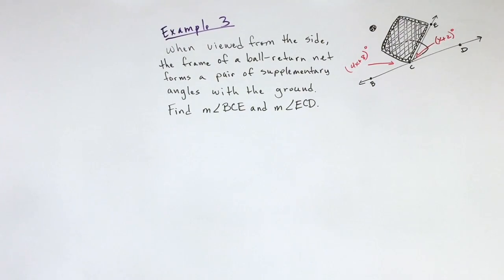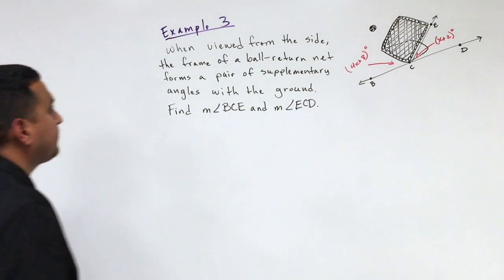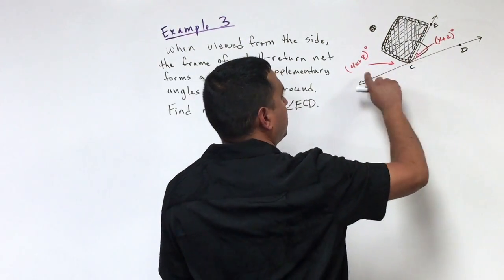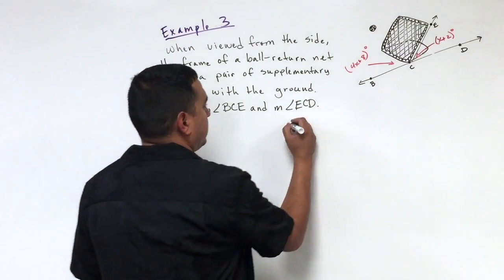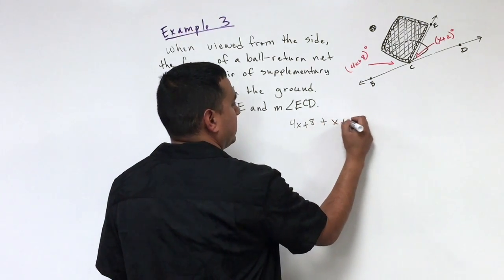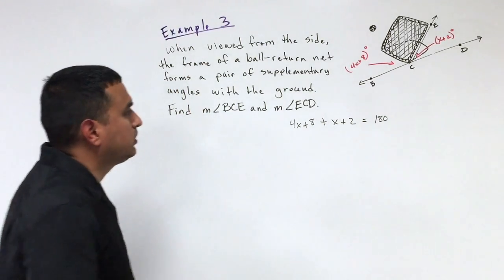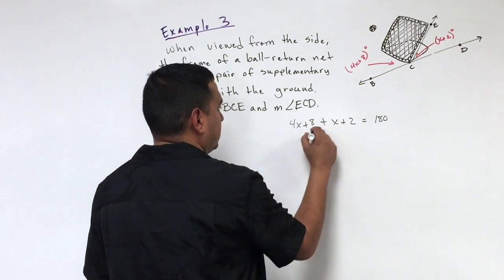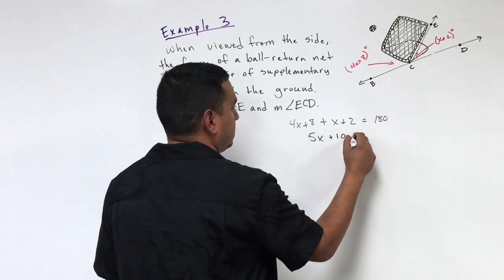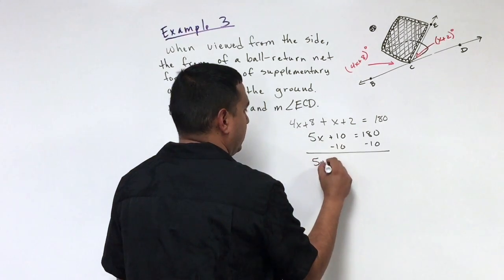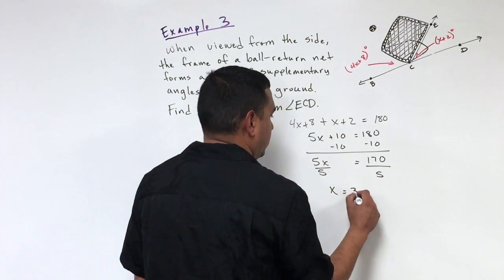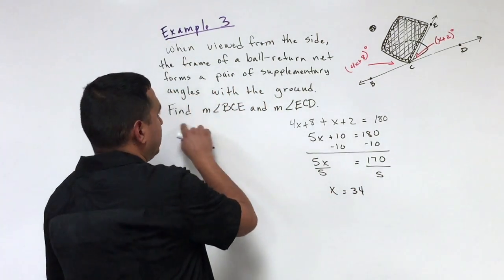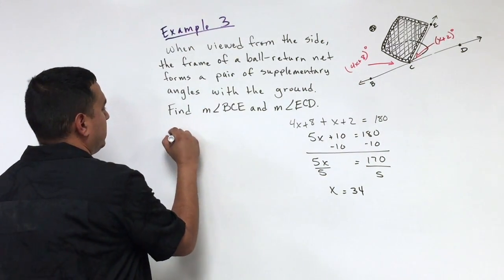Example three: when viewed from the side, the frame of a ball return net forms a pair of supplementary angles with the ground. Find the measure of angle BCE and angle ECD. This is a linear pair, so the two angles are supplementary. My equation is: 4x + 8 + x + 2 = 180 degrees. Combining like terms: 5x + 10 = 180. Subtracting 10 from both sides: 5x = 170. Dividing by 5, x = 34.